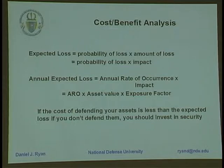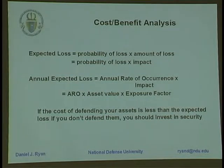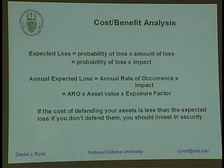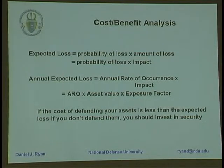An expected loss is always a probability times an impact — the probability that the impact will occur times whatever the value of the impact is. Converted into these terms, the annual expected loss is the annual rate of occurrence times the impact of each event. The impact turns out to be connected to the value of the asset but not solely, because if the attack is on integrity and you're able to simply go down to your bank vault, recover your backup, and remount it, the damage can be quite small — just the inconvenience of doing so. In that particular case, the impact would be much less than the value of the asset.